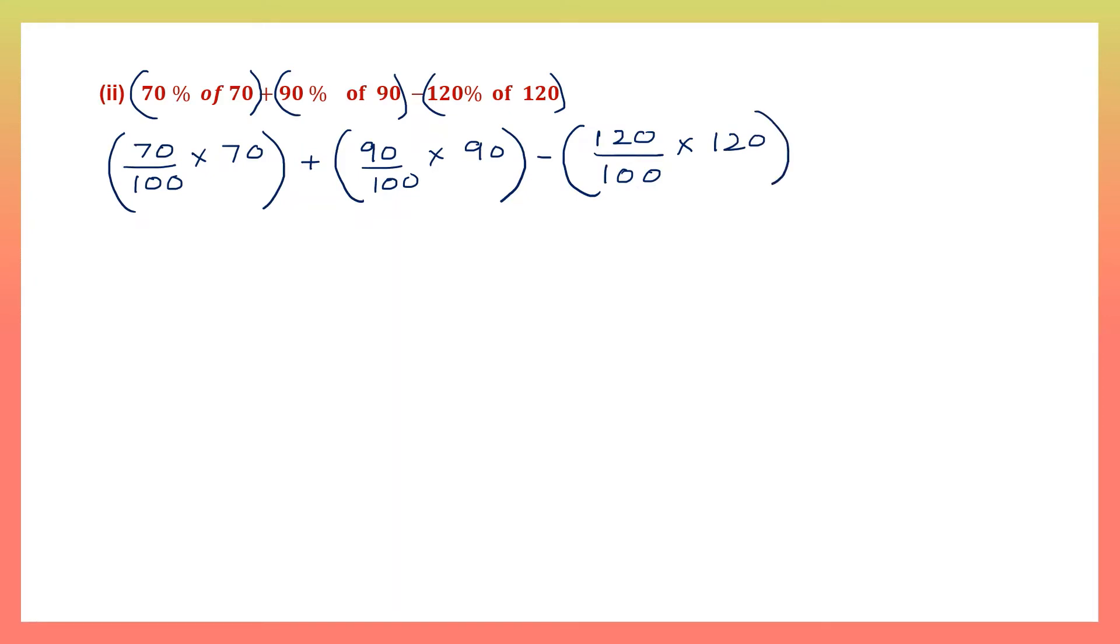Now let's cancel what we can. What do I get in my numerator? 7 sevens are 49 by 1. Let's go to the second bracket, plus 9 nines are 81 by 1, minus the third one. 12 into 12 is 144 by 1. Now we have 49 plus 81 minus 144.